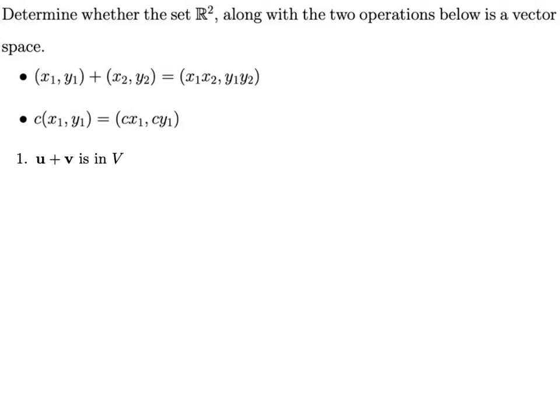So the first axiom is closure under addition. When we add two vectors in this new way, two ordered pairs in this new way, do we get another ordered pair in R²? So let's see. When we add these two ordered pairs together, according to this new addition operation, we just multiply the corresponding components.